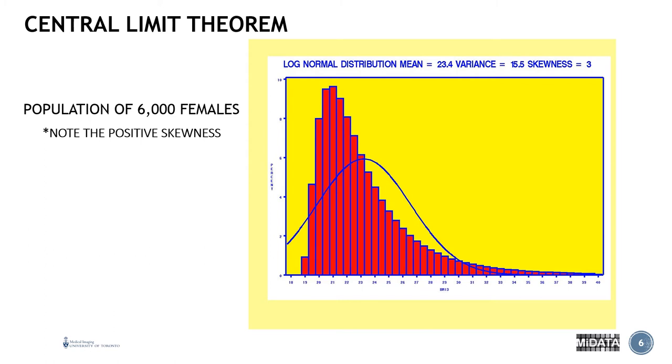Now, you'll see in the title, it says log normal distribution. So what it means is this data is distributed in such a way that if you were to take the log of it, it would result in a normal distribution. And so that's why it's called a log normal distribution.